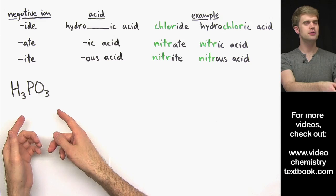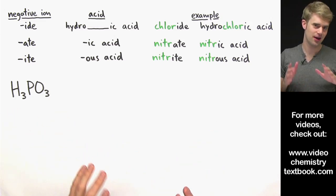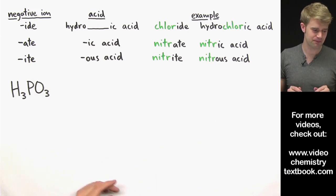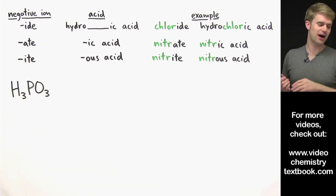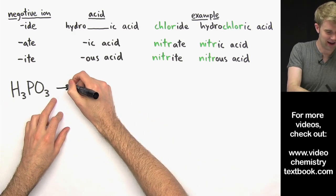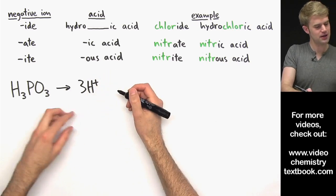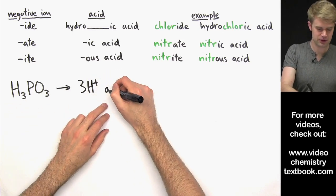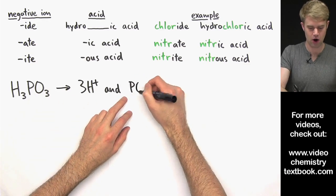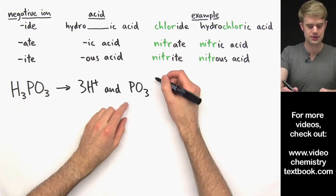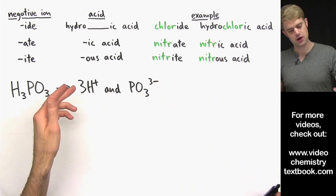H3PO3. This one's a little more challenging, so even if you think you're getting this down, I recommend that you just watch this one so that you don't get tripped up by it. To name the acid, I've got to figure out what the name of the negative ion is. To do that, I've got to split the acid apart. So I get 3H+, because I have H3 there, so that's the positive part, and then the negative part is going to be PO3. What's its charge? It's got to be 3 minus, it's got to be 3 minus to balance out this 3H+.